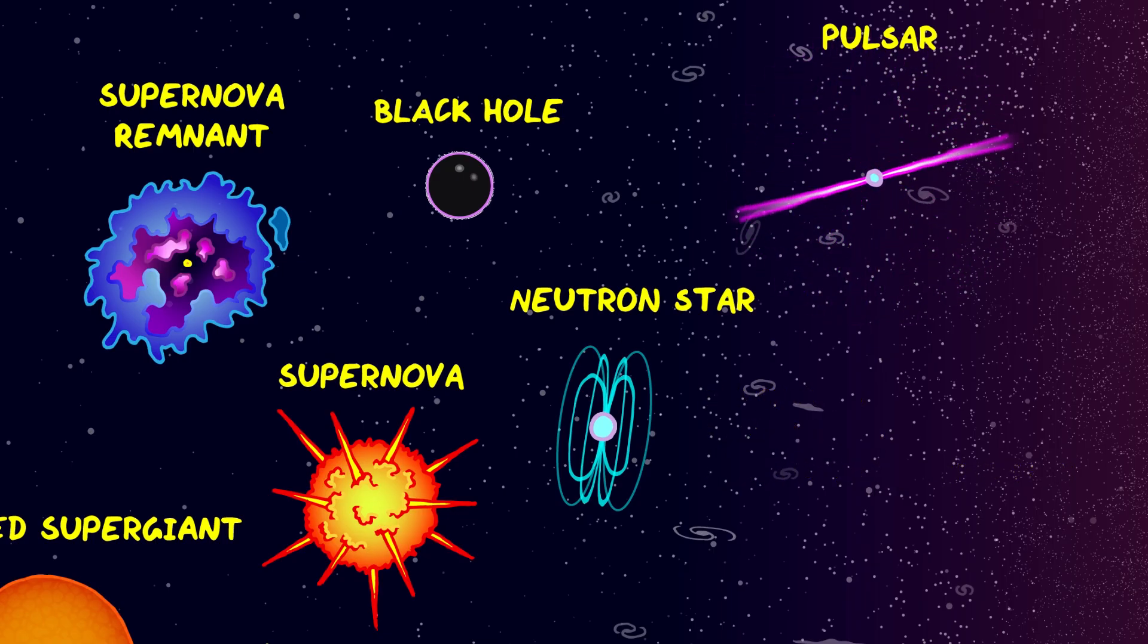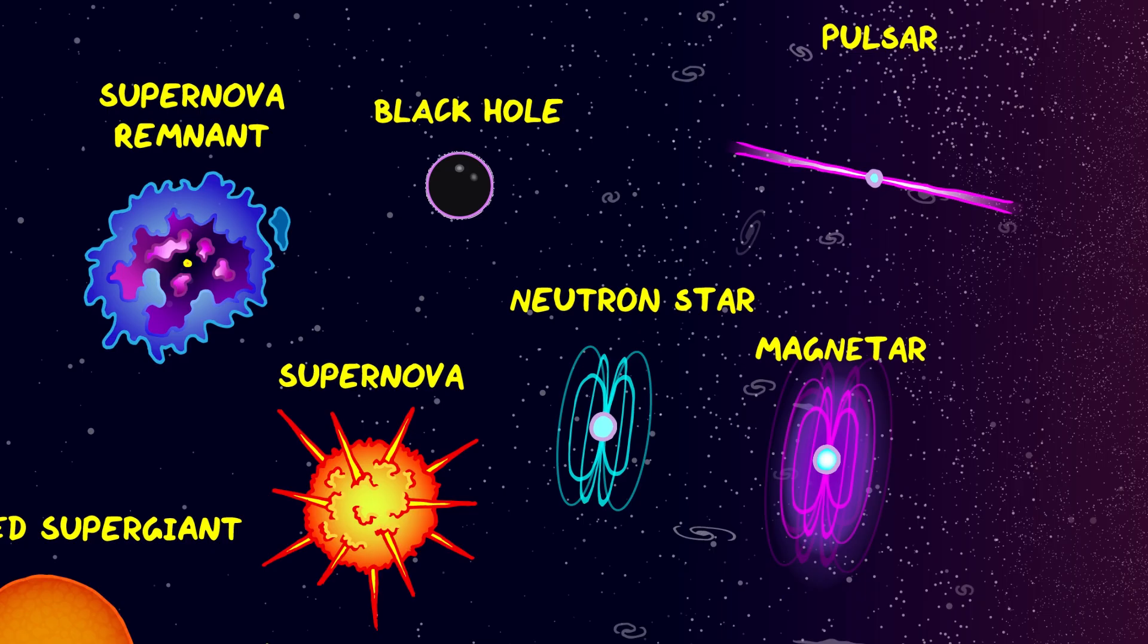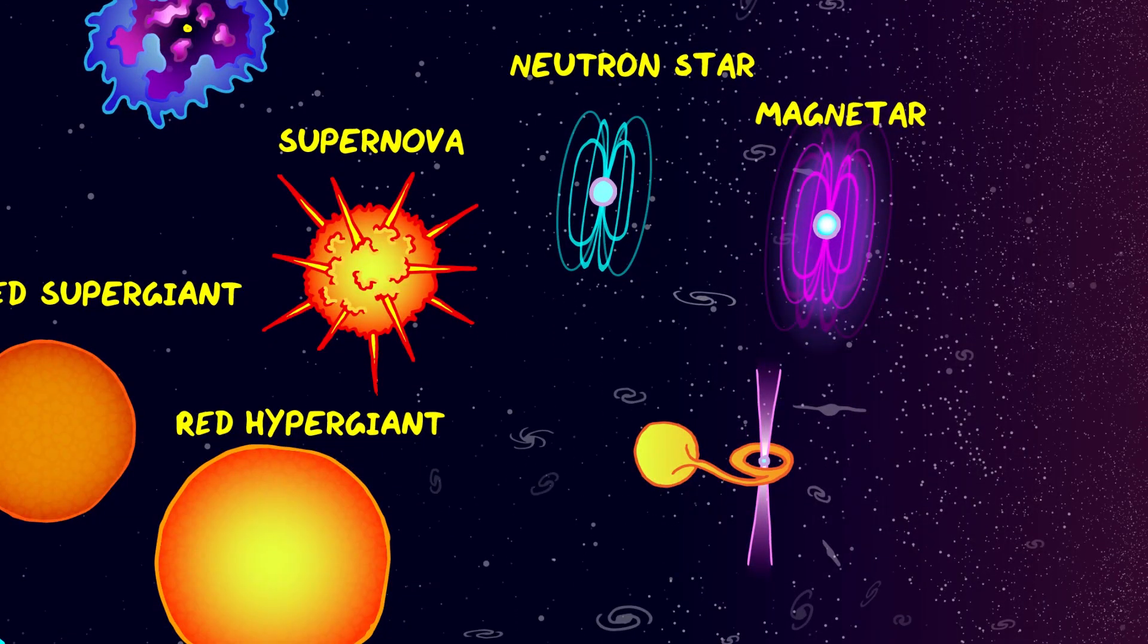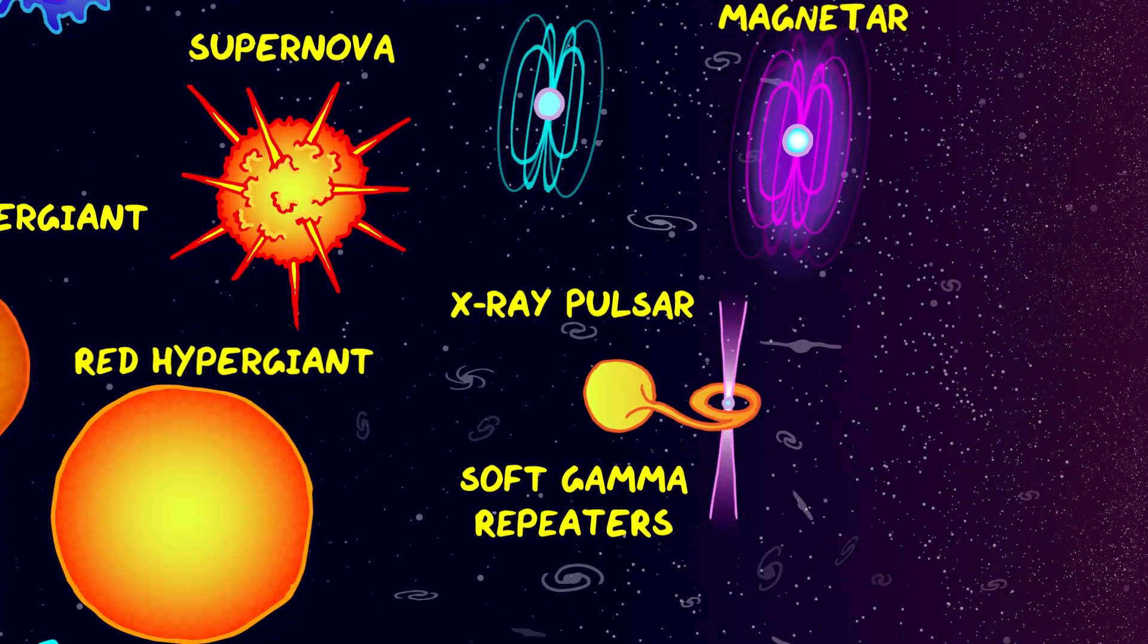The neutron stars with the strongest magnetic fields are known as magnetars, and they could be the explanation for mysterious signals we see in the sky like soft gamma repeaters and anomalous X-ray pulsars. An X-ray pulsar is a binary system where a normal star and a neutron star are orbiting around each other. The neutron star sucks matter from the main star, creating high energy beams of X-rays at the poles.